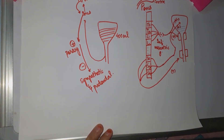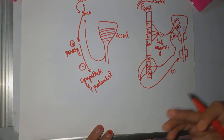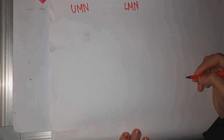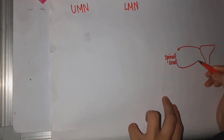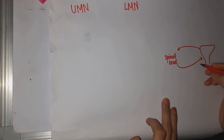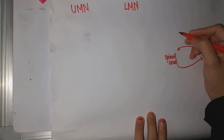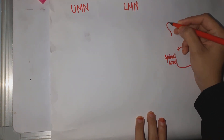The urine will pass when there is an appropriate social situation. Now we will see what happens in UMN and LMN type of lesion to the bladder. Sensation goes from the bladder to the spinal cord, and the motor command comes from the spinal cord to the bladder for micturition, but this is under the control of the higher brain center.